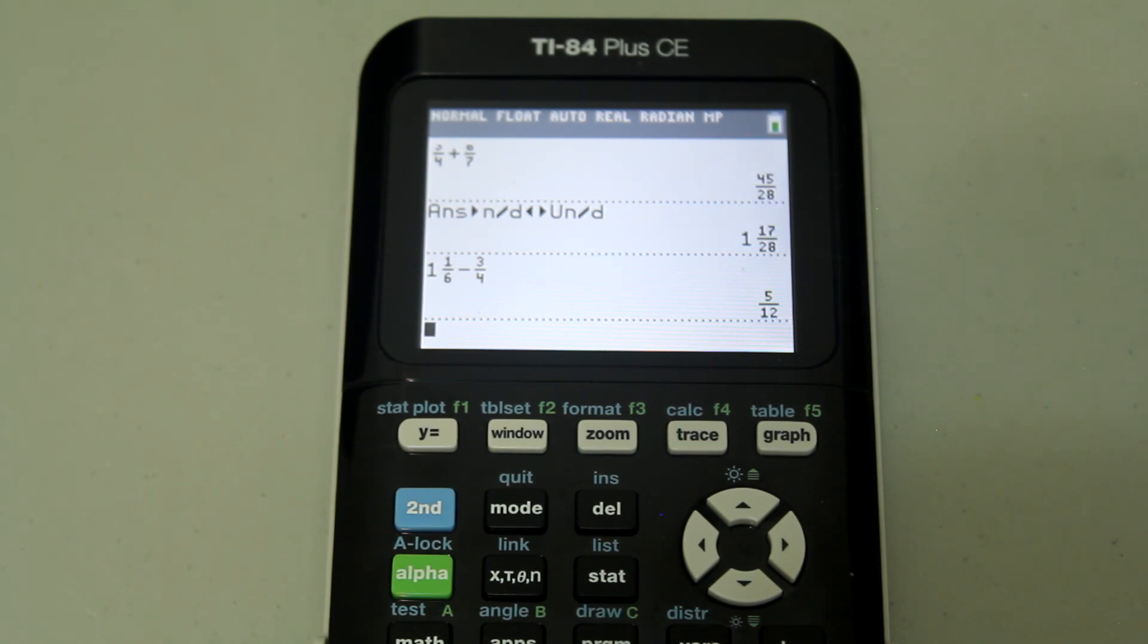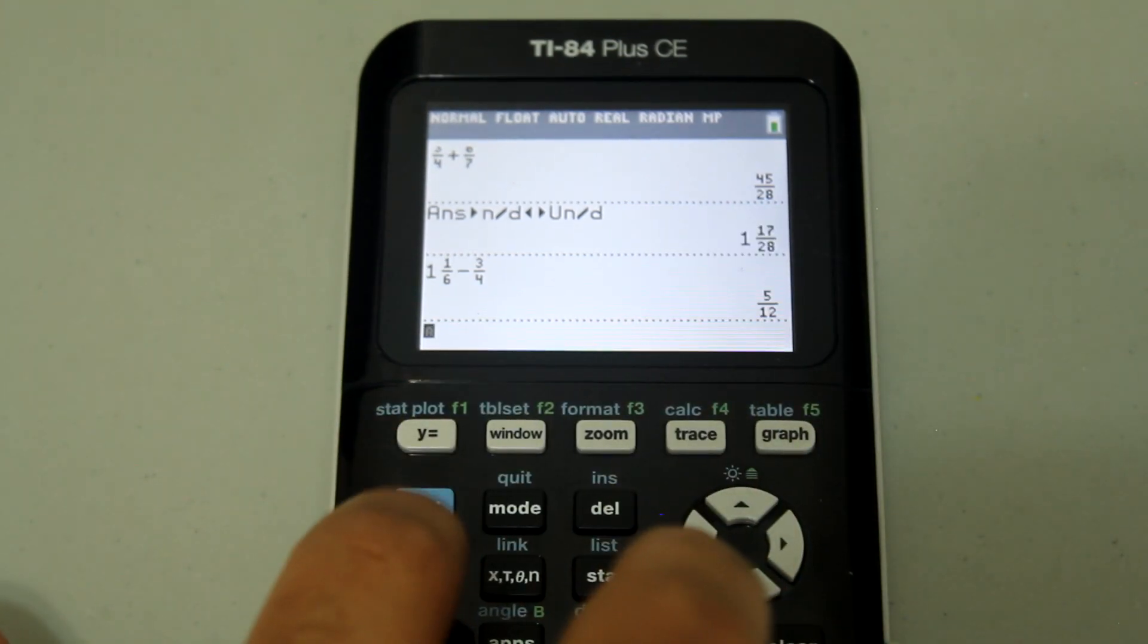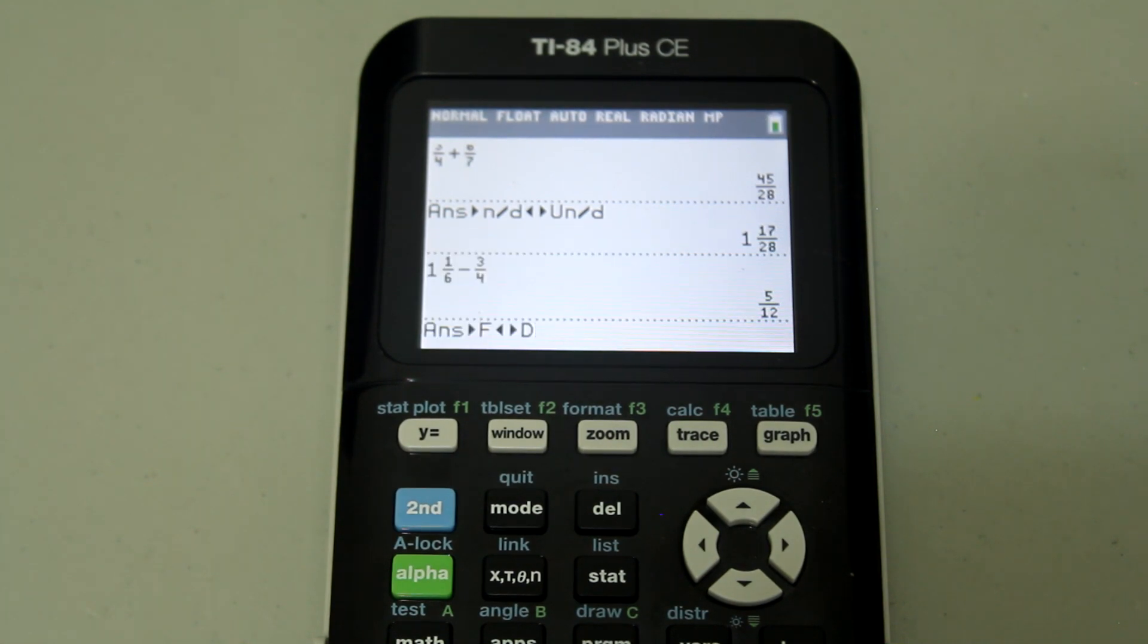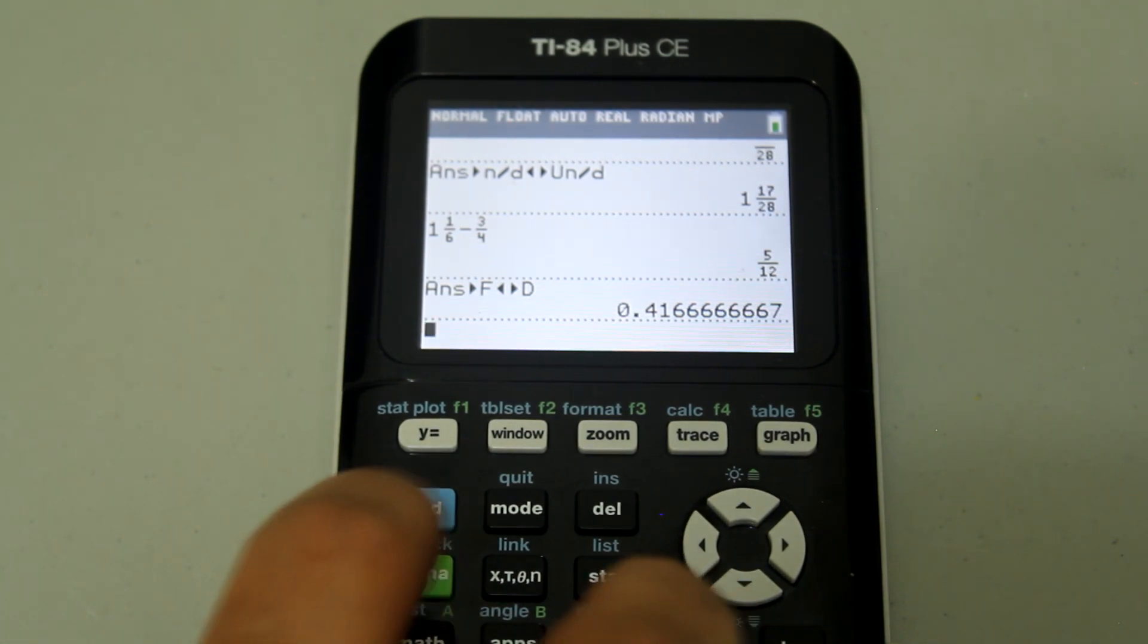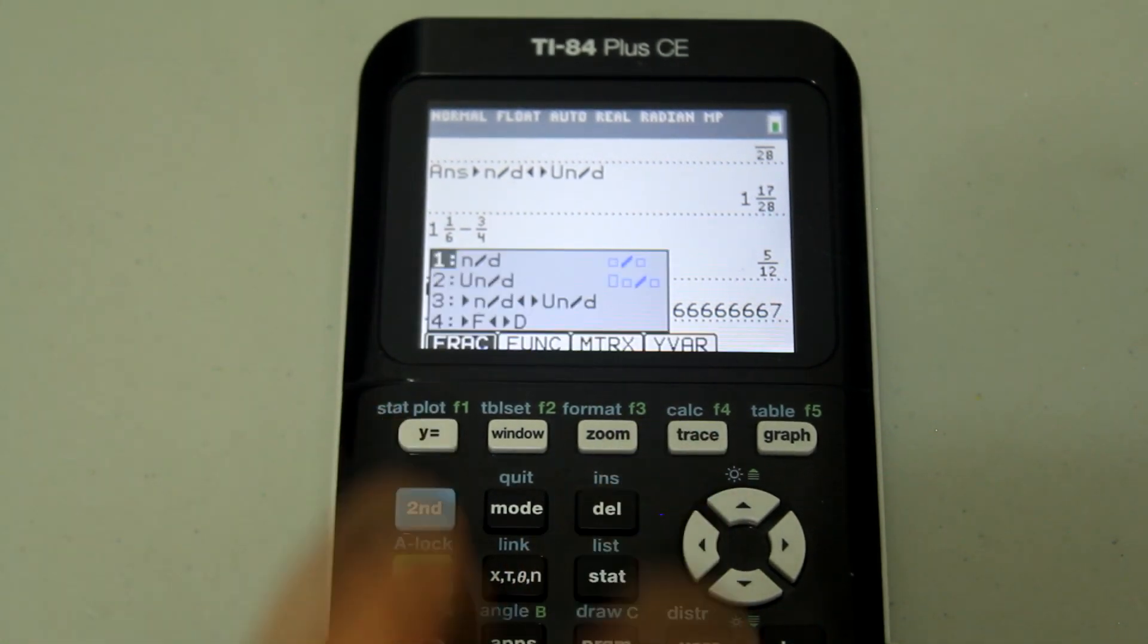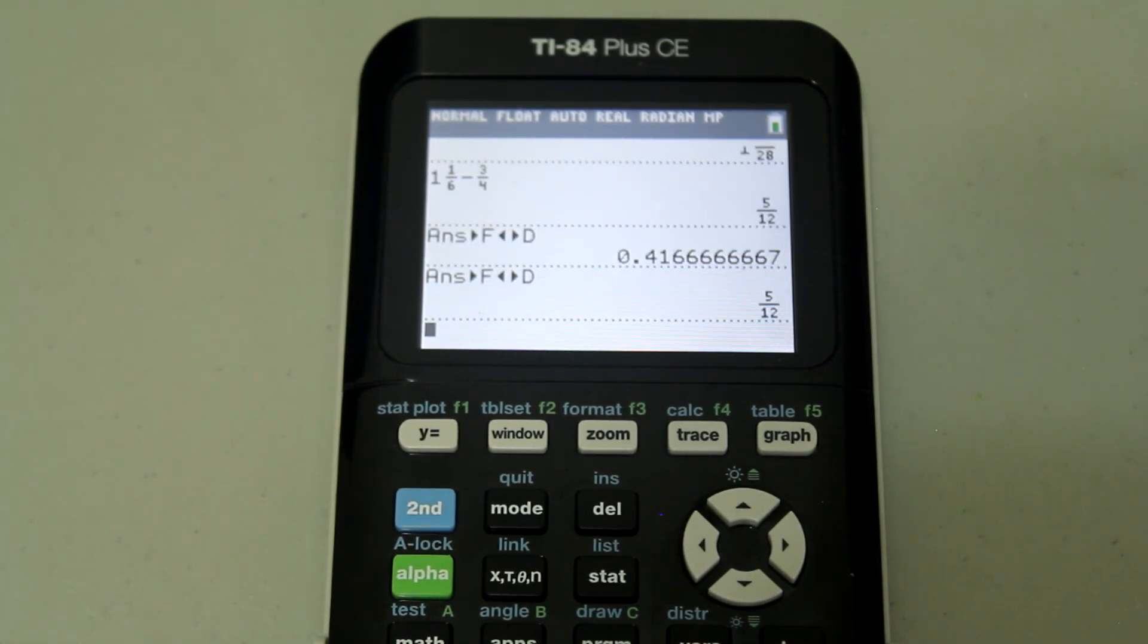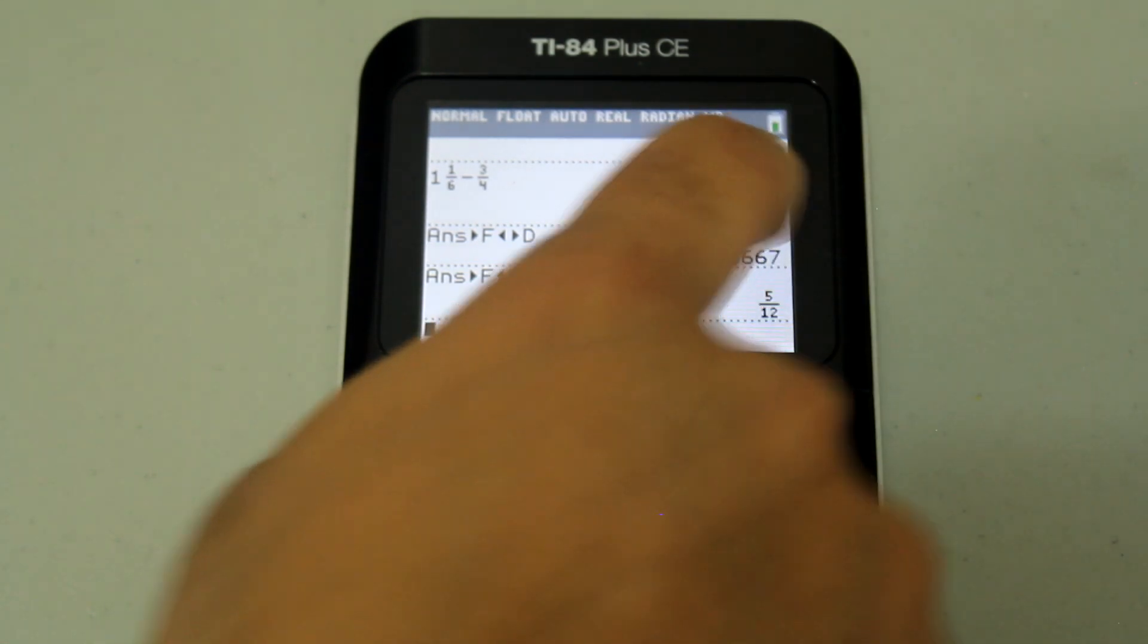And if you wanted to convert this fraction into a decimal, just go into alpha y equals and select the fourth option and hit enter here and that converts it to a fraction form and you could easily do the opposite. Alpha y equals number four and that gives you the fraction form. Notice that this was converted from a fraction to a decimal.